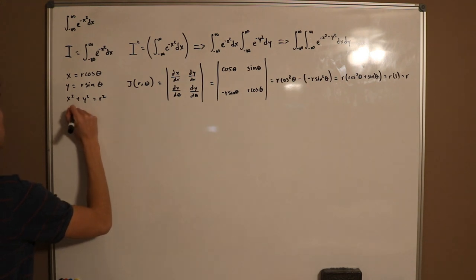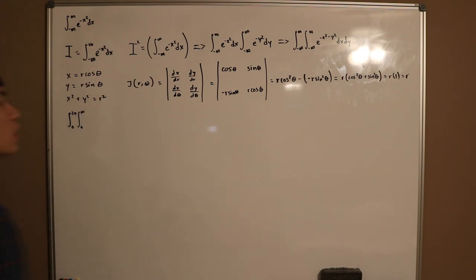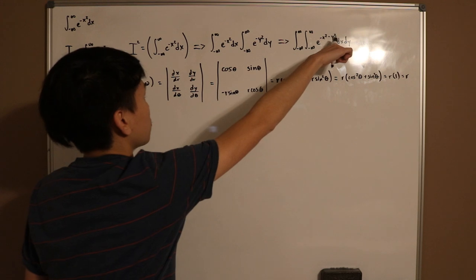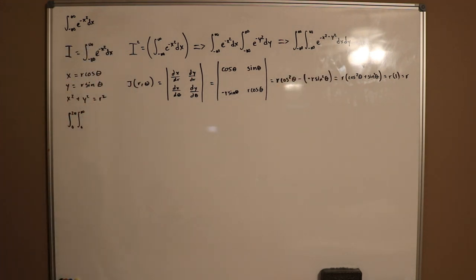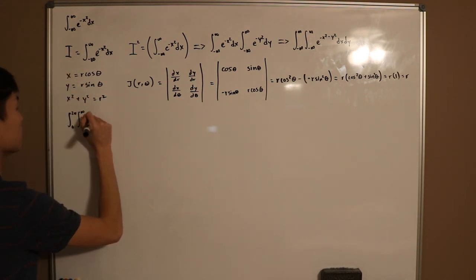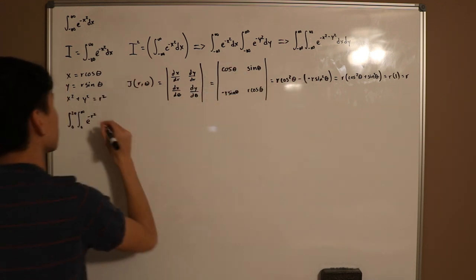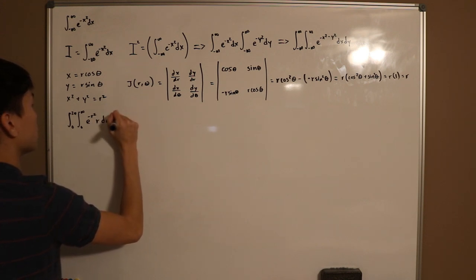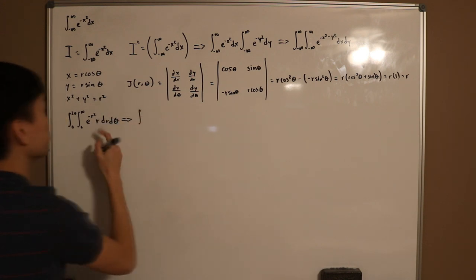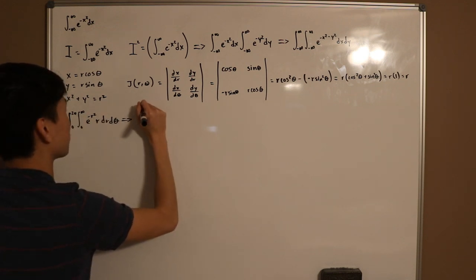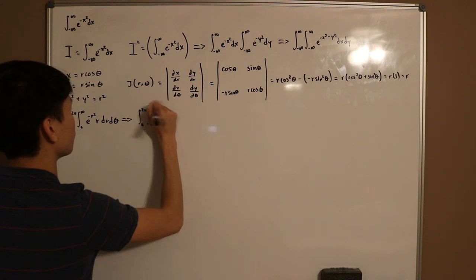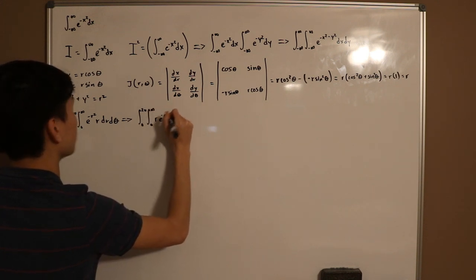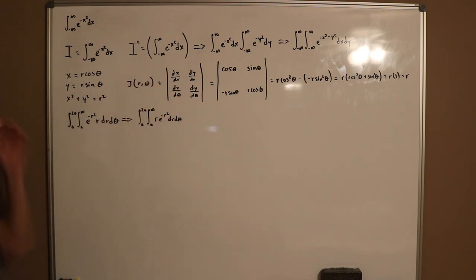So rewriting this, we get zero to two pi and then zero to positive infinity. This is negative x squared minus y squared. And you can actually replace that with your radius r squared. So this would literally be e to the negative r squared. And then don't forget, multiply your Jacobian right here. So times r dr d theta. I'm gonna move this r to the other side so it looks better in my opinion. Zero to two pi, zero to infinity of r e to the negative r squared dr d theta.